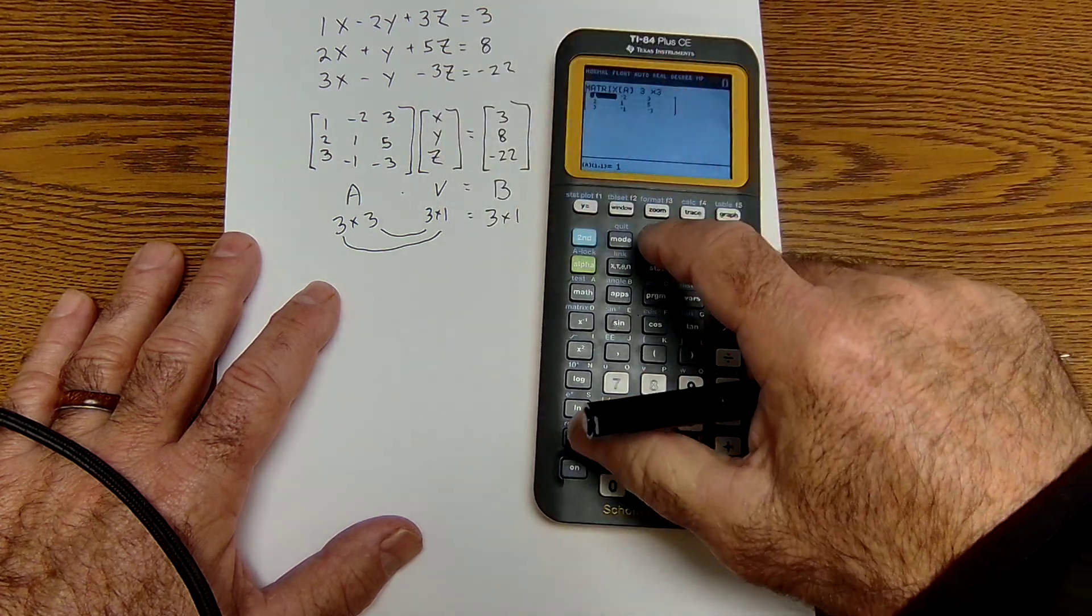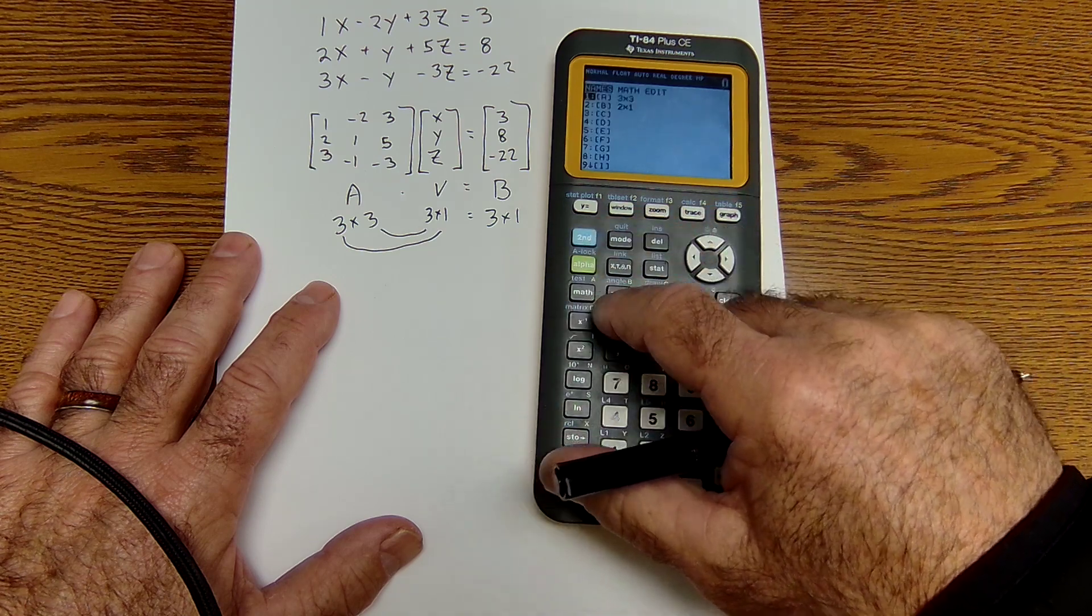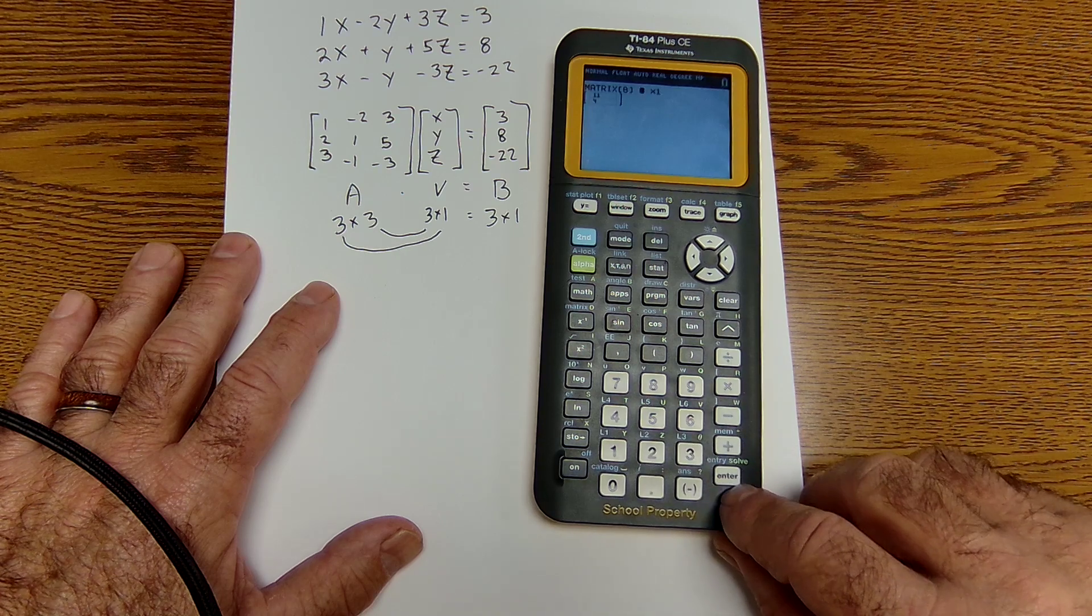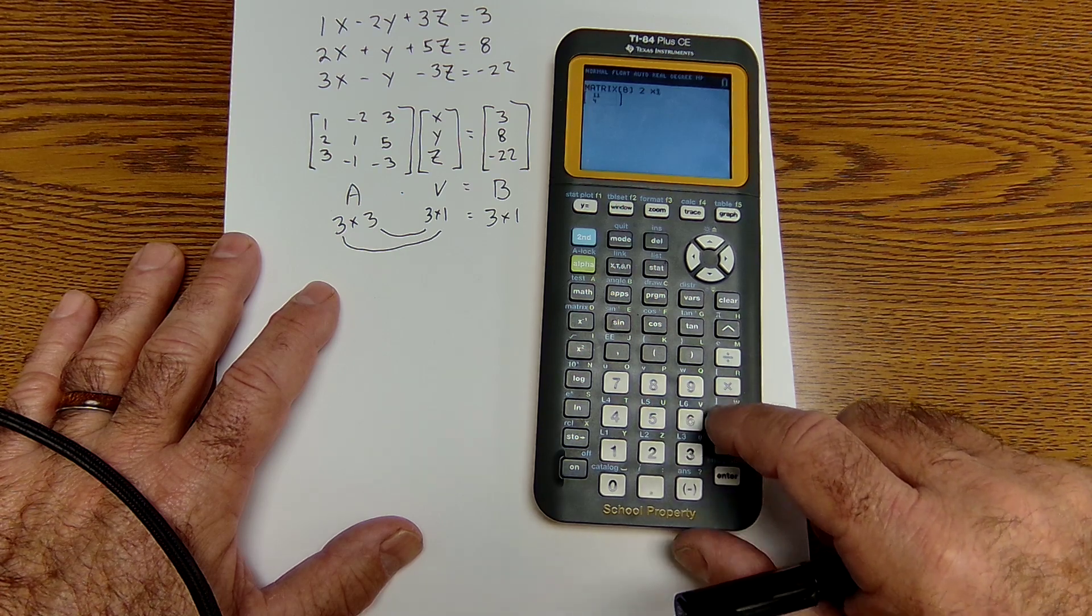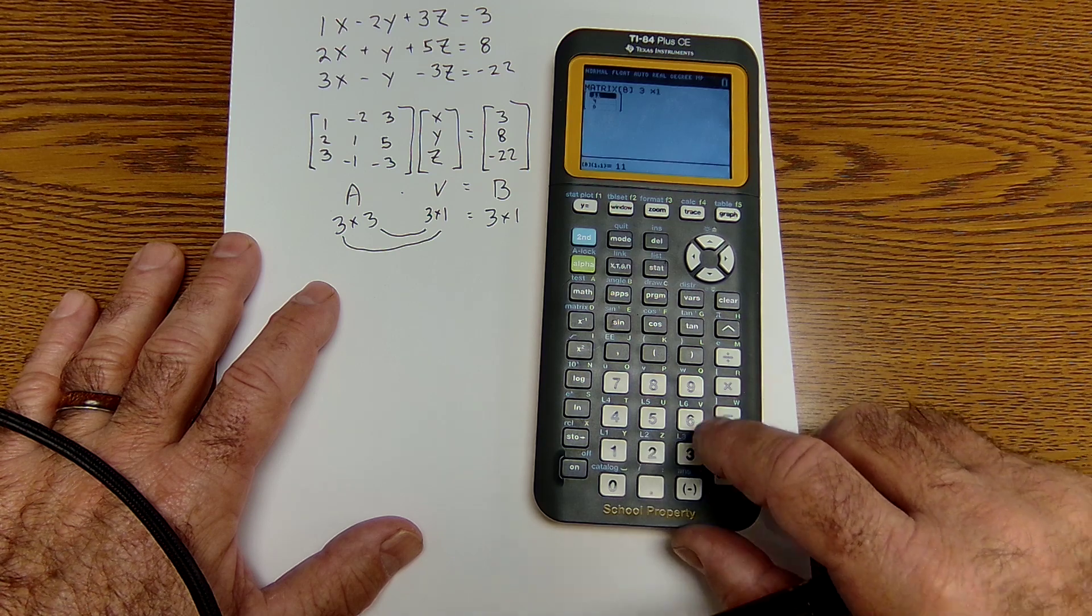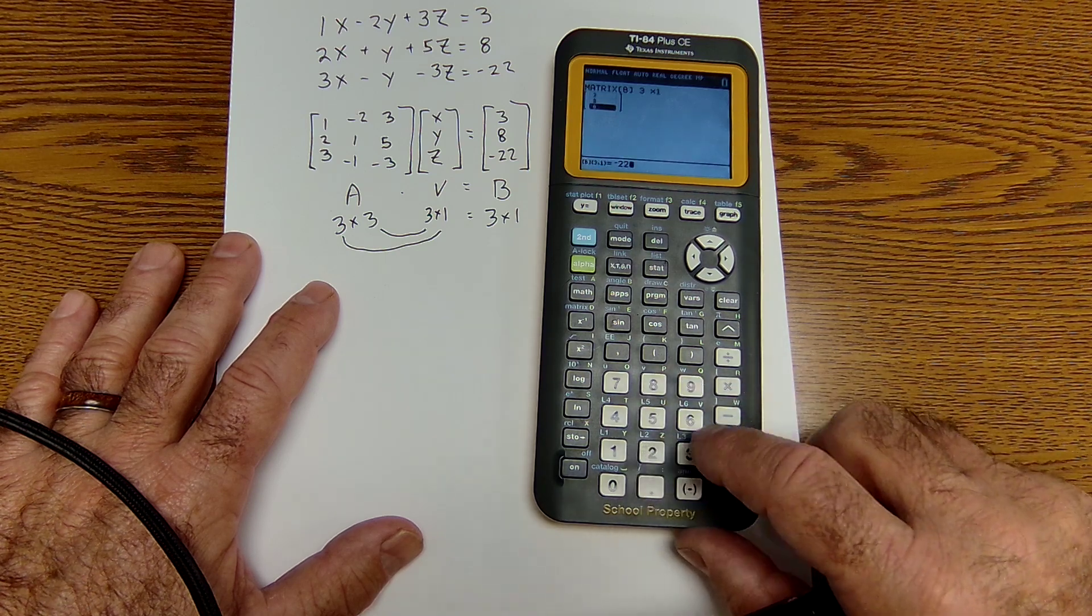Let me quit. I'm going to go back to matrix. I'm going to edit matrix 2. It's a 3 by 1. The values are 3, 8, negative 22.